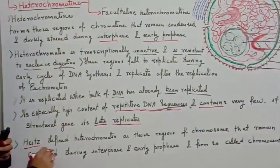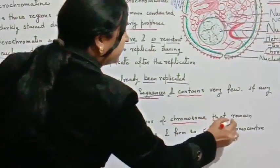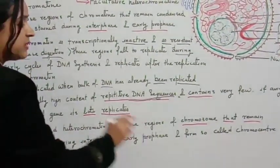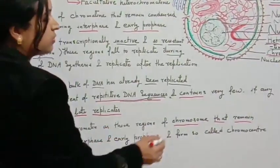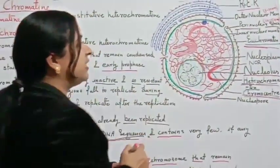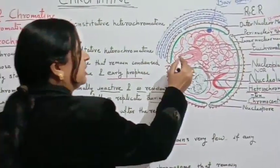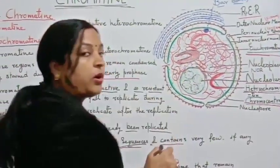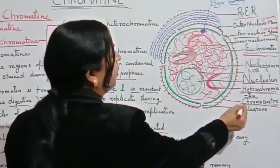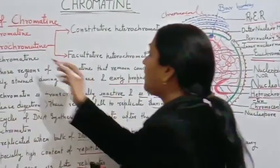Heterochromatin region contains repeated sequences of DNA. Those regions of the chromosome that remain condensed during interphase or early prophase are called chromocenters. Scientists have shown that these condensed regions during interphase and early prophase are called chromocenters.